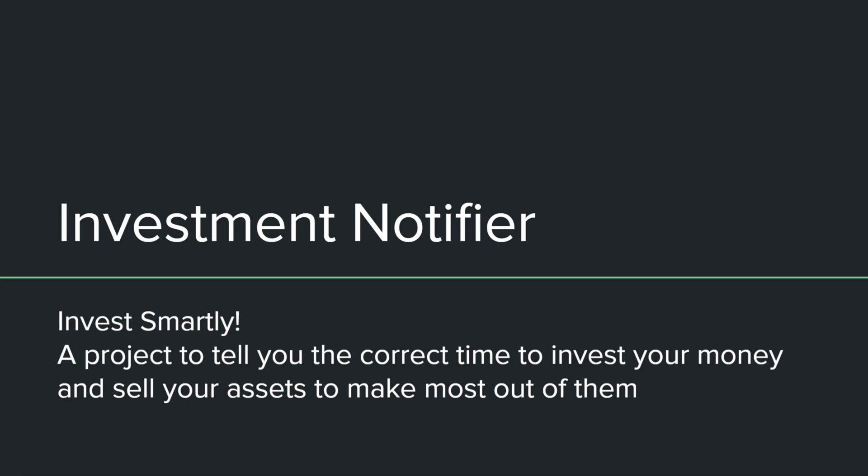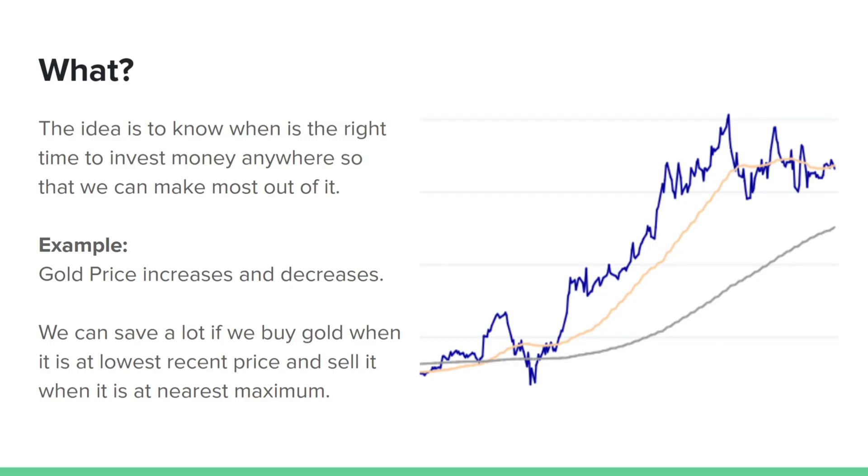So what about the event? We will be focusing on any kind of investment, let's say gold or Bitcoin, and we will be using its current price and checking its live price. If there is a decrease, we will notify that it is the correct time to invest. Otherwise, if it is an all-time high, we can notify that it's the correct time to sell. The idea is to know when is the right time to invest money so that we can make the most out of it.